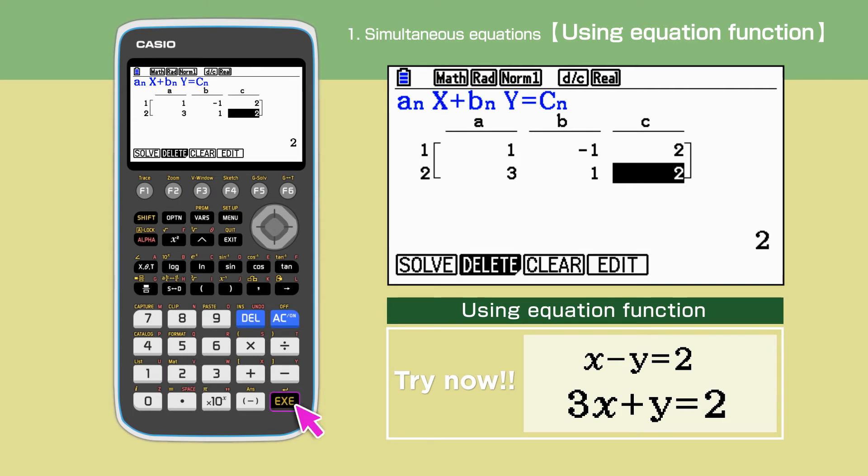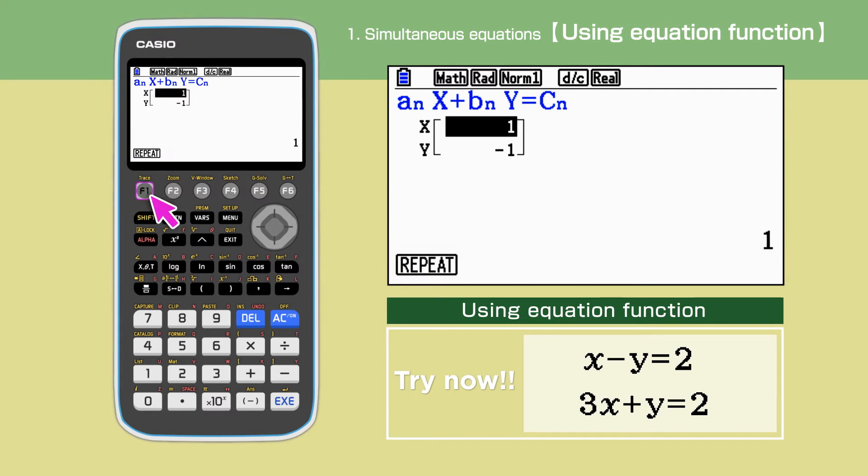Press Execute to confirm. Press F1 to solve the equations. The answer is 1 for X and minus 1 for Y.